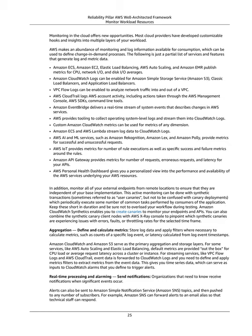Custom Amazon CloudWatch metrics can be used for metrics of any dimension. Amazon ECS and AWS Lambda stream log data to CloudWatch logs. AWS AI and ML services, such as Amazon Rekognition, Amazon Lex, and Amazon Polly, provide metrics for successful and unsuccessful requests. AWS IoT provides metrics for number of rule executions as well as specific success and failure metrics. Amazon API Gateway provides metrics for number of requests, erroneous requests, and latency for your APIs. AWS Personal Health Dashboard gives you a personalized view into the performance and availability of the AWS services underlying your AWS resources. Monitor all of your external endpoints from remote locations using synthetic transactions (sometimes referred to as user canaries), which periodically execute some number of common tasks performed by consumers of the application.